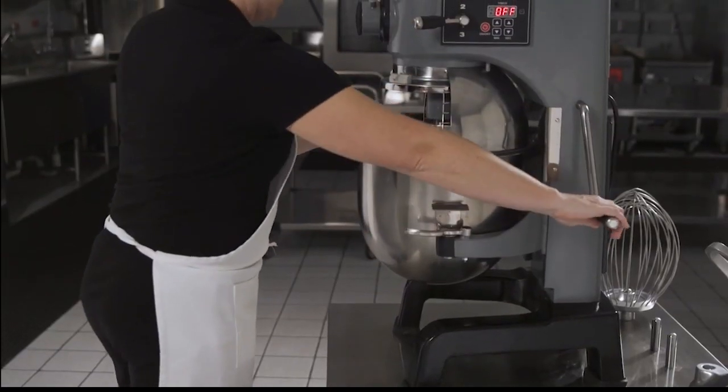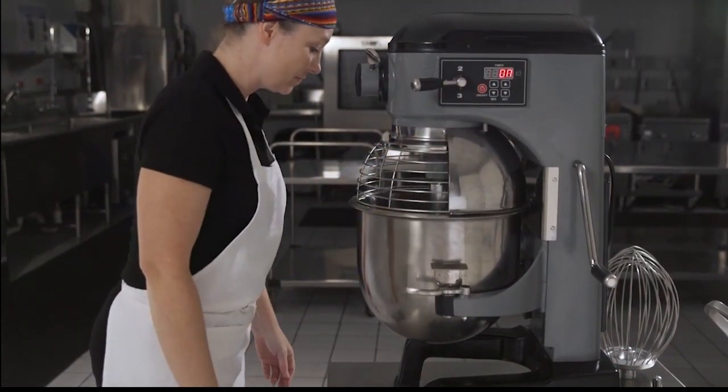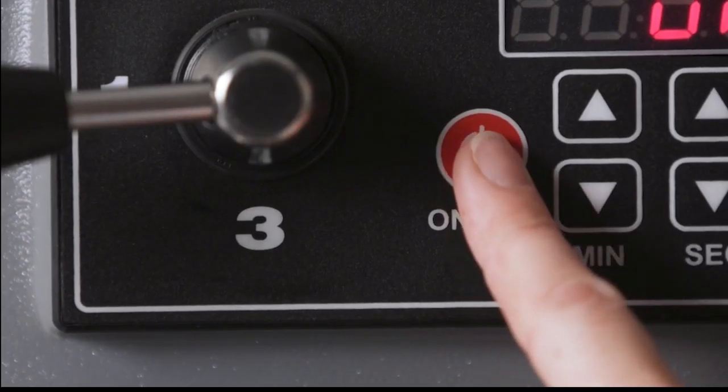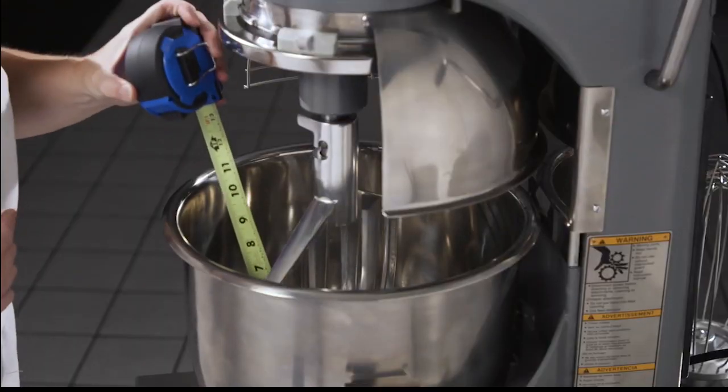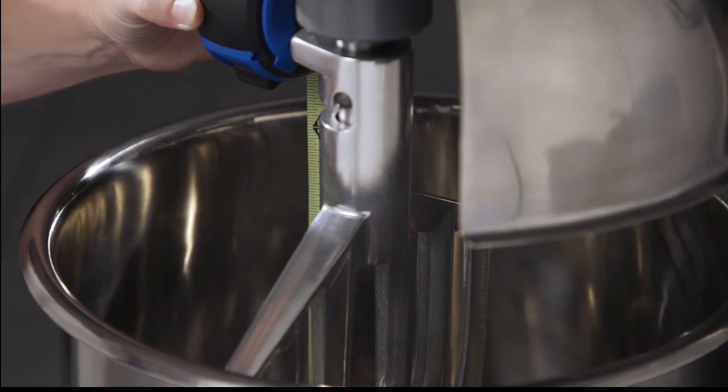Pour enough flour in the bowl to cover the bottom. With the bowl fully raised, briefly run the mixer at its lowest speed. Turn the mixer off and unplug. Measure the depth of the flour where the beater has traced a path. Measure several areas to assure accuracy.